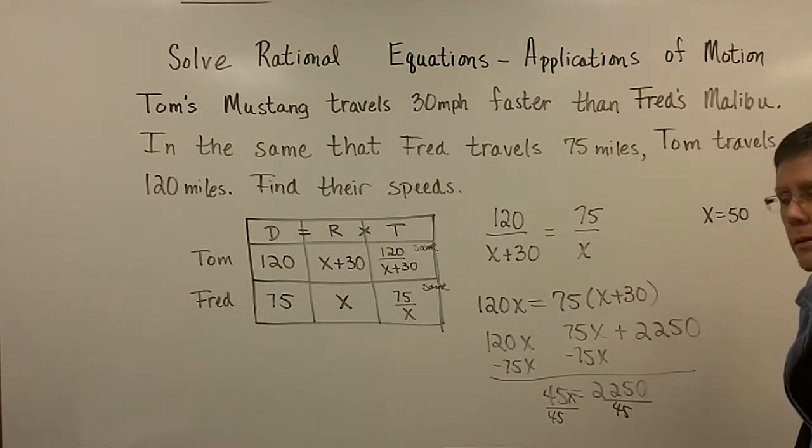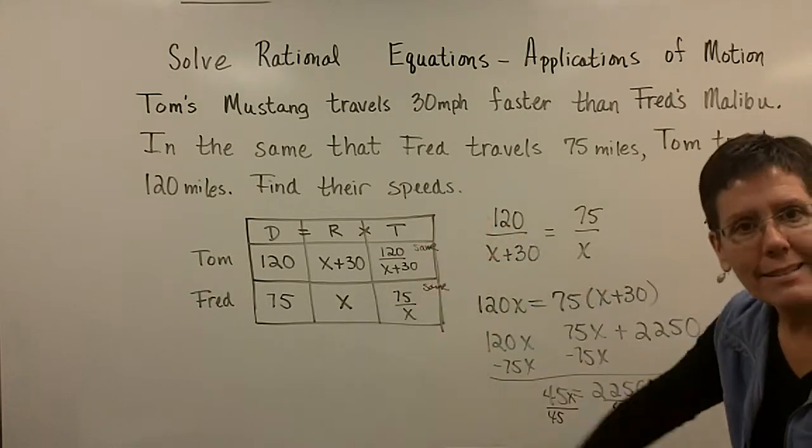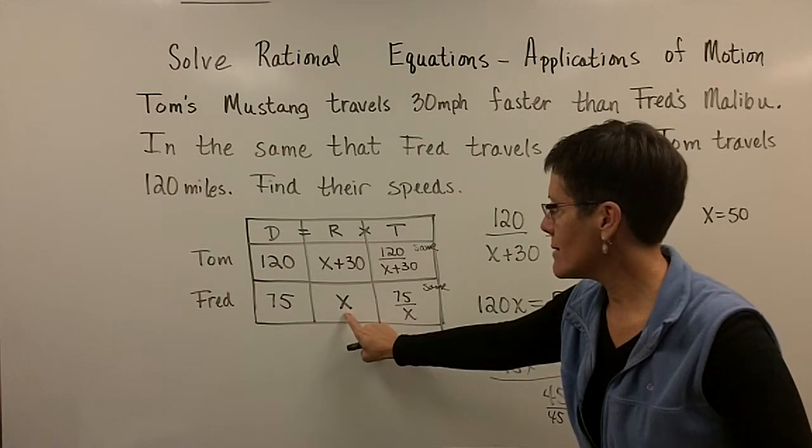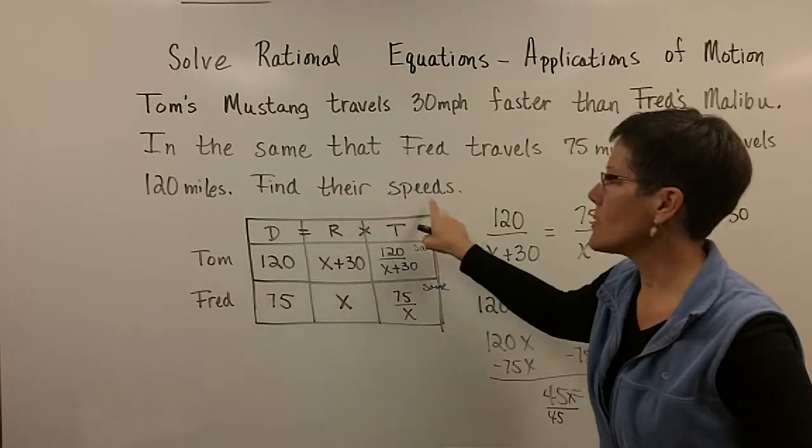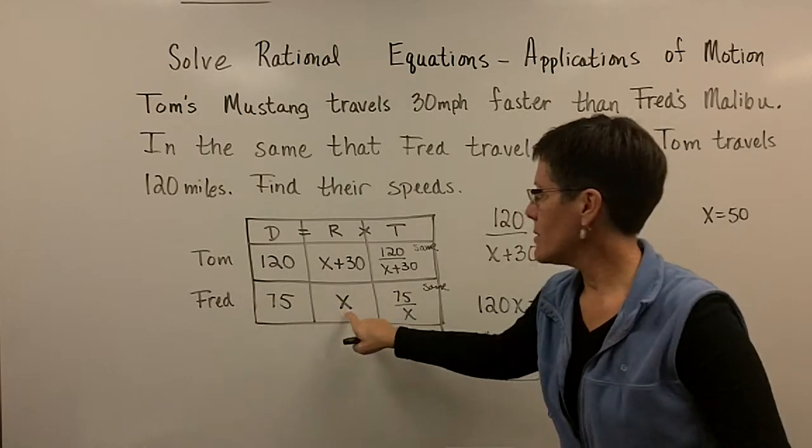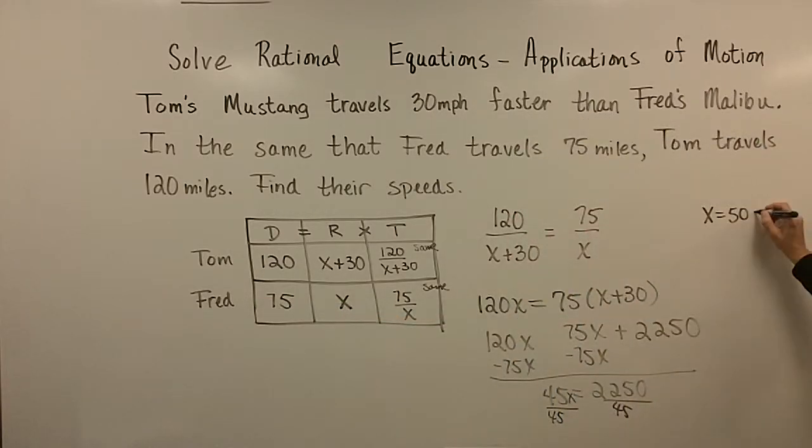What is x? Let's go back and look at the original box here. x, under the rate column x. Because I want to find their speeds. So it looks like Fred is traveling.